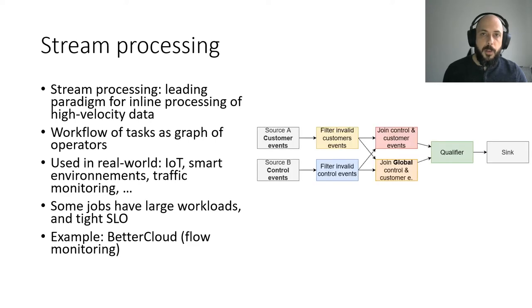We present here the example of BetterCloud, a flow monitoring application. Its goal is to trigger actions or alerts based on customer actions such as login or mail reception. BetterCloud processes 100 million daily events with a 2 second maximum latency. We can see here that two origin tasks, the source, correspond to the point of ingestion in the workflow.